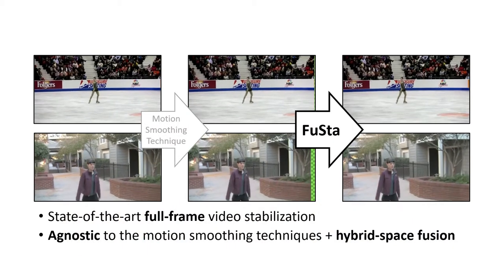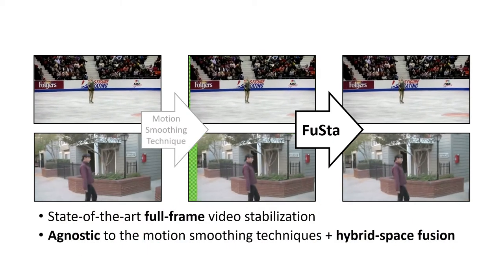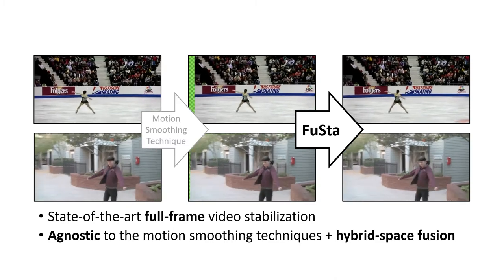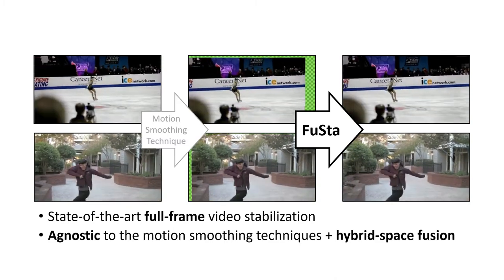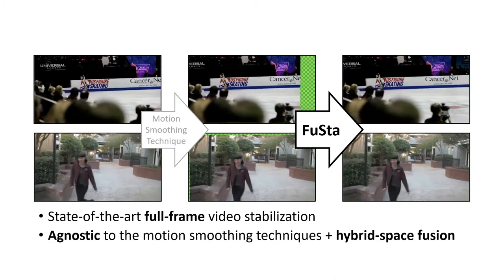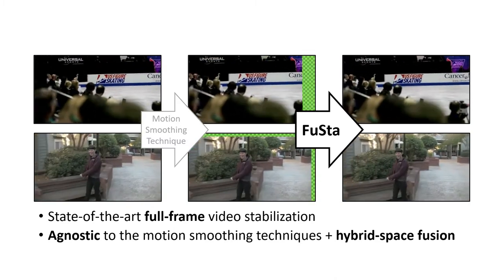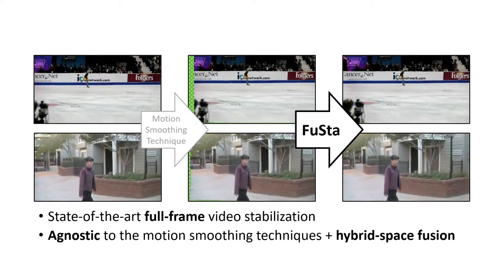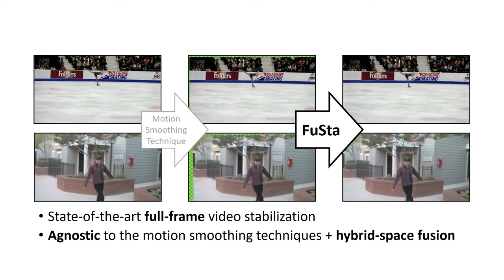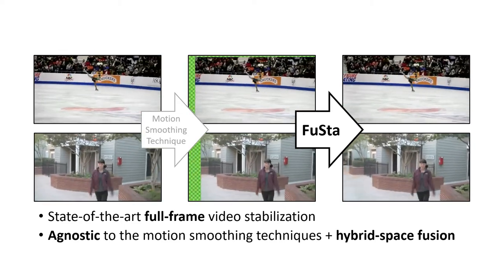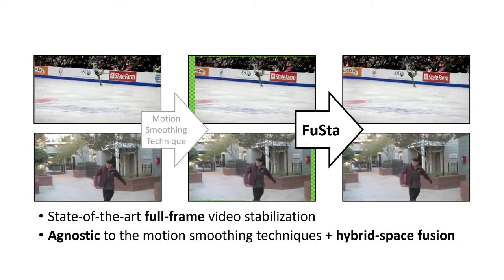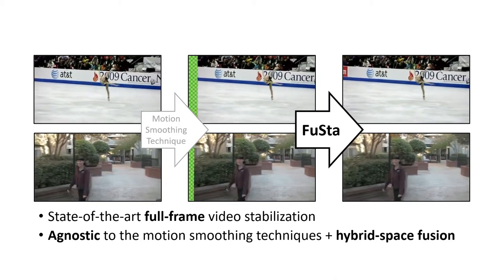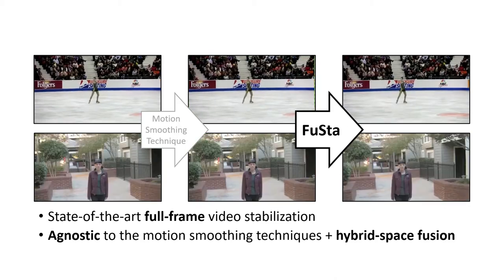FUSTA is a frame synthesis algorithm that achieves state-of-the-art full-frame video stabilization. FUSTA is agnostic to particular motion smoothing techniques and fuses information from multiple frames at both feature and image space. Moreover, as you can see here, it robustly fills in missing contents at the frame borders caused by warping.